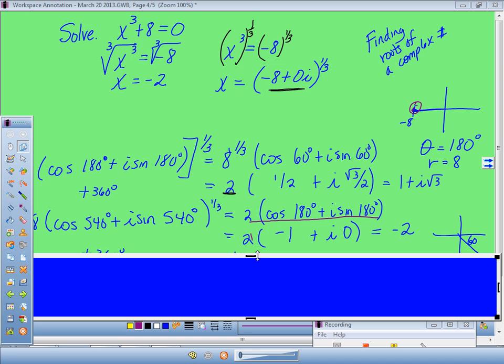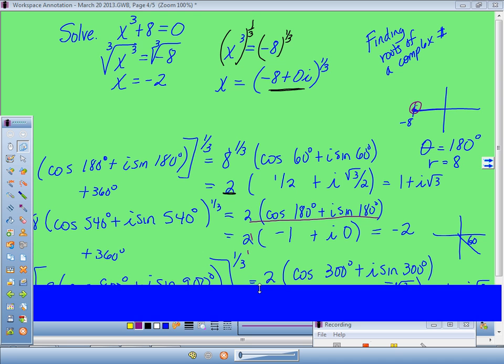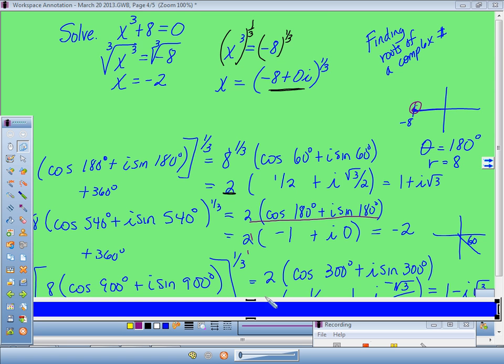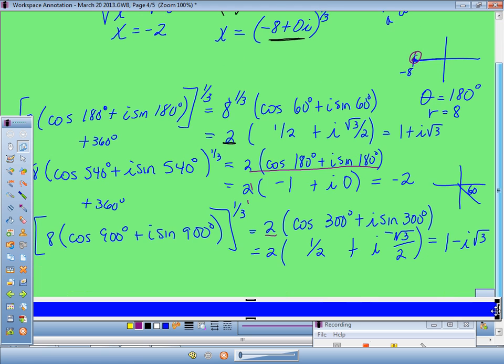So we know we need 3 answers since it's x³. You're going to do this one more time. You're going to add on 360, which in this case is going to give you 900. And then you're going to take it to the 1/3rd power. 8 to the 1/3rd power is 2. And 1/3rd times 900 is 300.